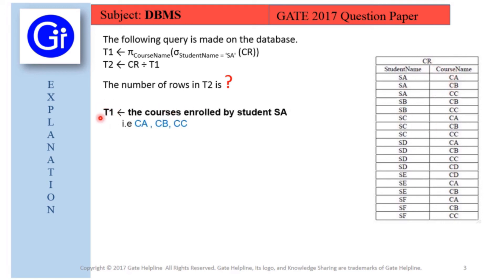First we evaluate T1. T1 projects course_name where student_name is 'SA' from the CR table. Looking at the table, SA appears in three rows with course names CA, CB, and CC. So the output of T1 is: {CA, CB, CC}.